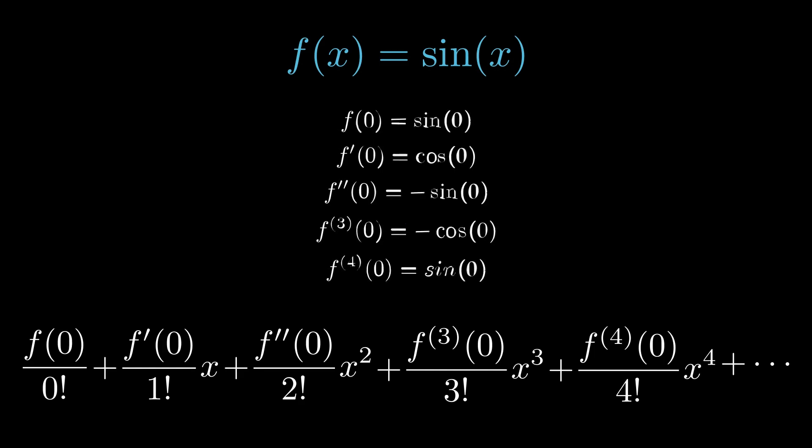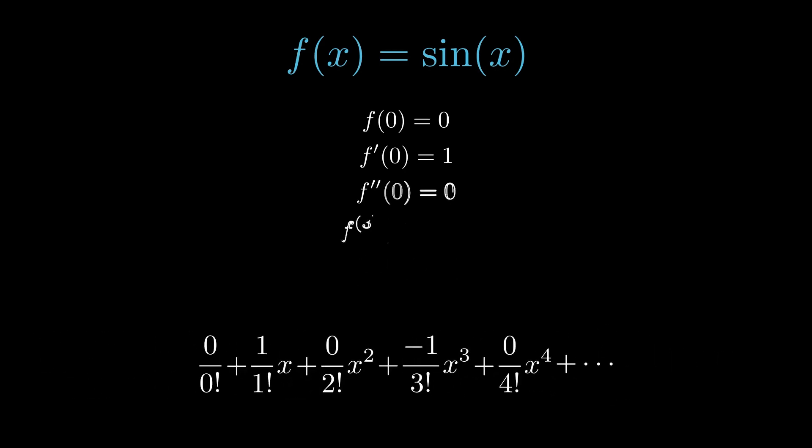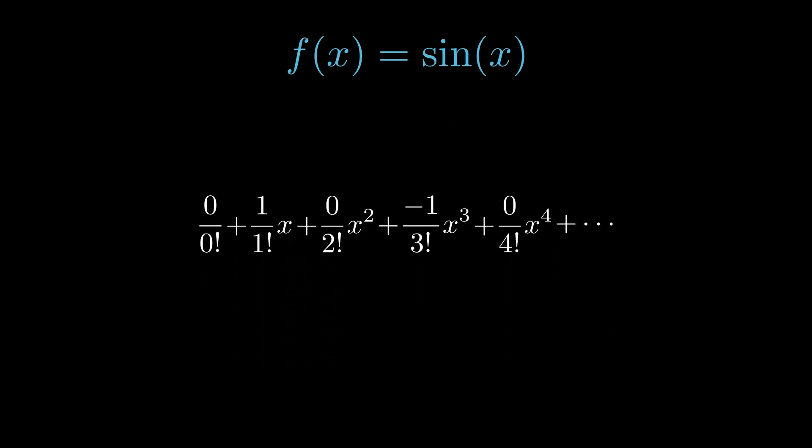After evaluating these derivatives at zero, we can simplify our power series expansion by plugging those values into our equation. This will simplify quite nicely into alternating polynomial terms that go to infinity.